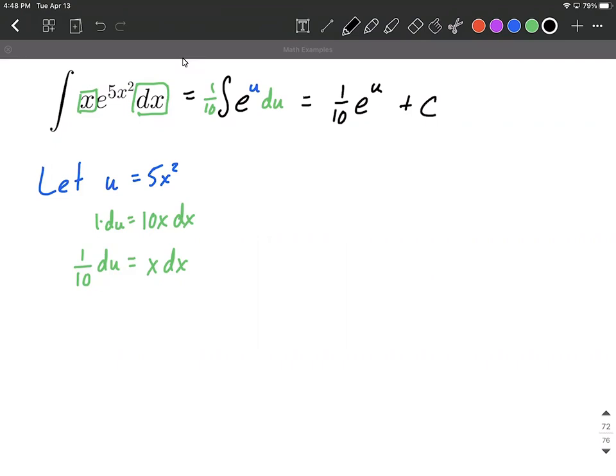To finish this up, we need to get back in terms of x's because our original problem started with x's. So we'll put one-tenth e to the 5x squared power. We're placing back in using that let statement. Bring along our plus c and we've got it.